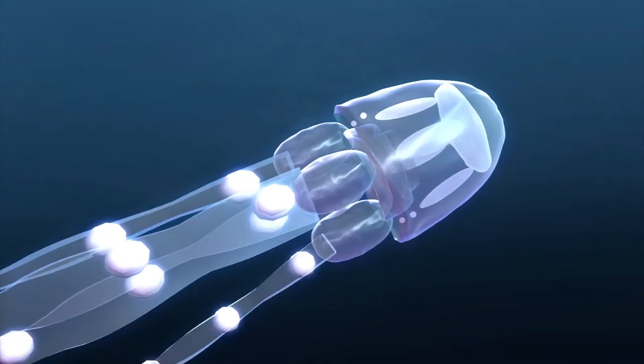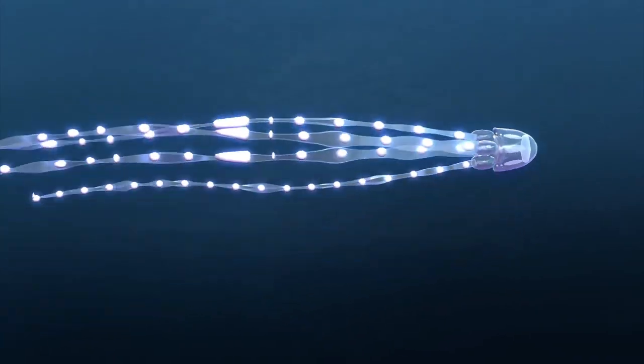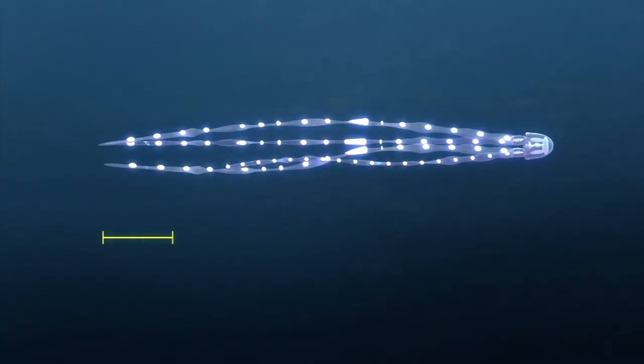The Irukandji jellyfish is only 2.5 cm in diameter, but its four tentacles can range from a few centimeters in length to up to a meter.